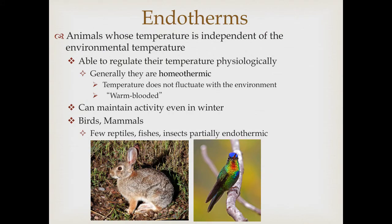Endotherms, by contrast, are animals whose temperature is independent of the external environment, at least within some bounds, because they're able to regulate their temperature physiologically. Generally they are homeothermic — their temperature stays at a pretty steady state and does not fluctuate with the environment. These are the animals you see active throughout the year. On the coldest day of winter, you may not see any snakes, lizards, or insects, but you will see birds and mammals. A few larger reptiles have limited physiological abilities for endothermy, potentially including the dinosaurs, and some fishes like tunas and even some insects may be partially endothermic.